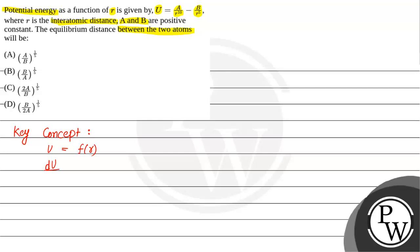We will differentiate the potential energy with respect to r. For equilibrium, the condition is that the rate of change of potential energy with respect to r should be equal to zero. From here, equating and finding the value of r — let's use this same concept to solve this question.